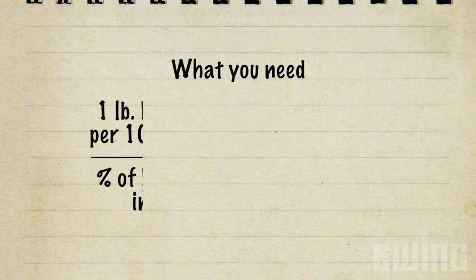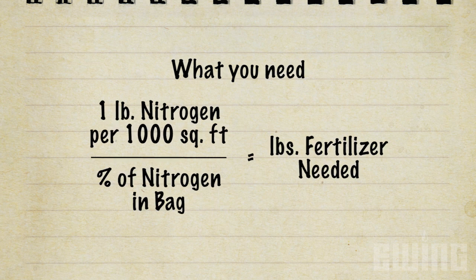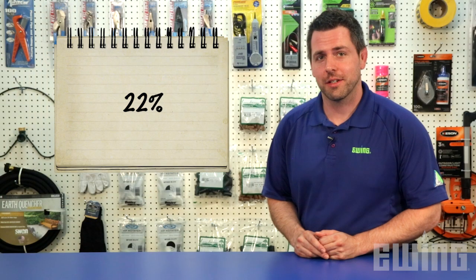What you need will be determined by this simple formula. We know that we want to spread one pound of nitrogen per thousand square feet of turf area based on the industry standard. For our example, we'll say that we have 2,500 square feet. If the first number from the fertilizer bag is 22, that means that 22% of the bag's weight is in the form of nitrogen.